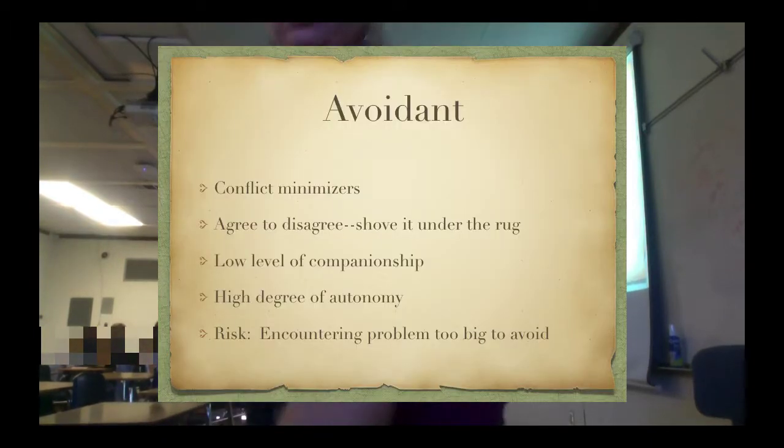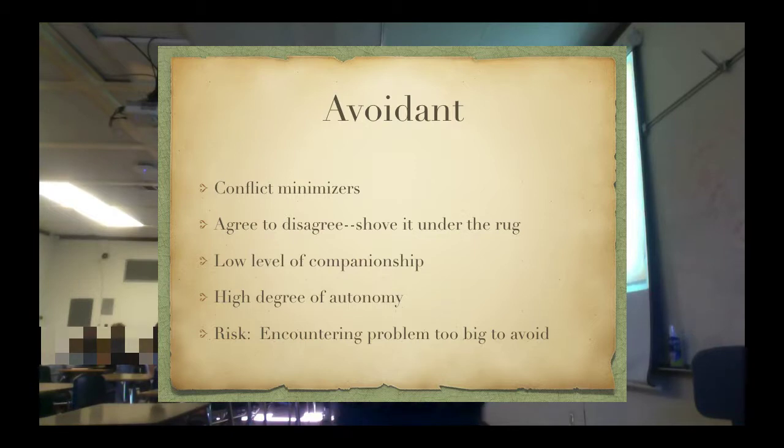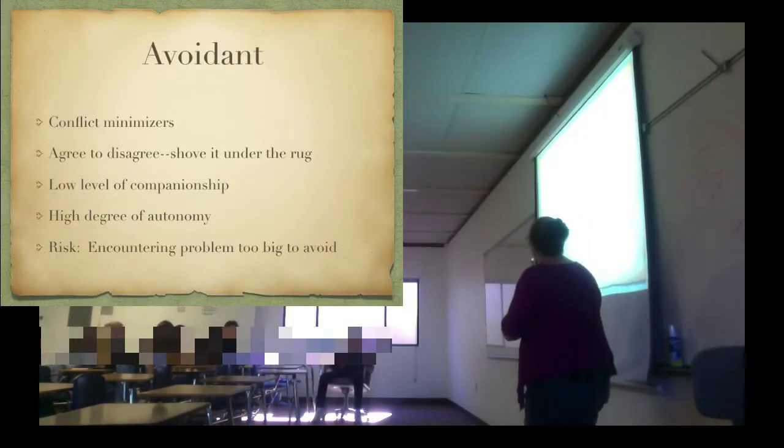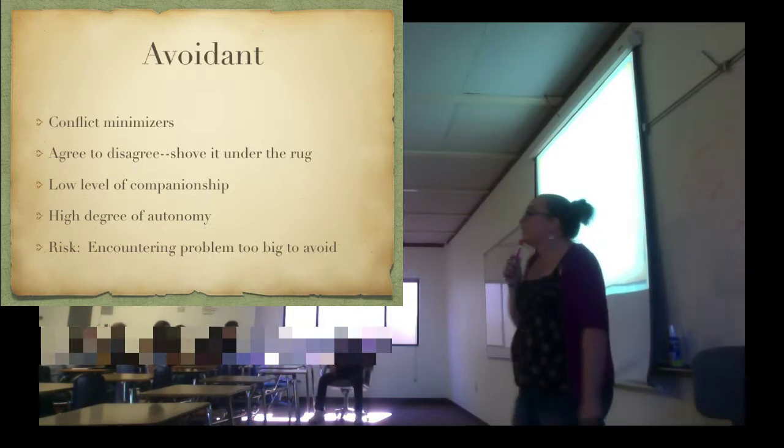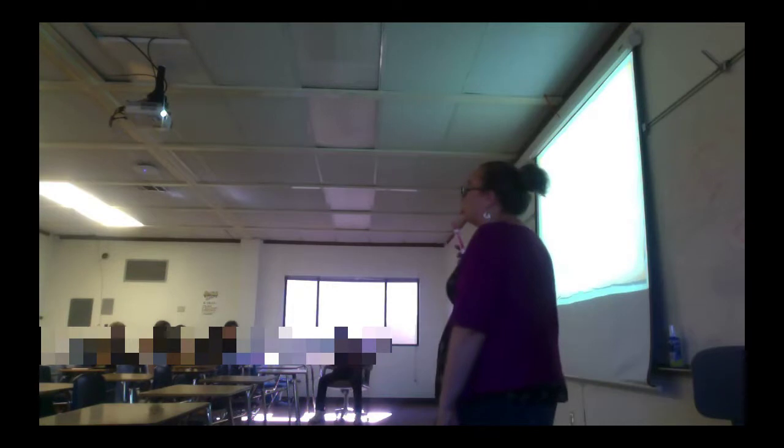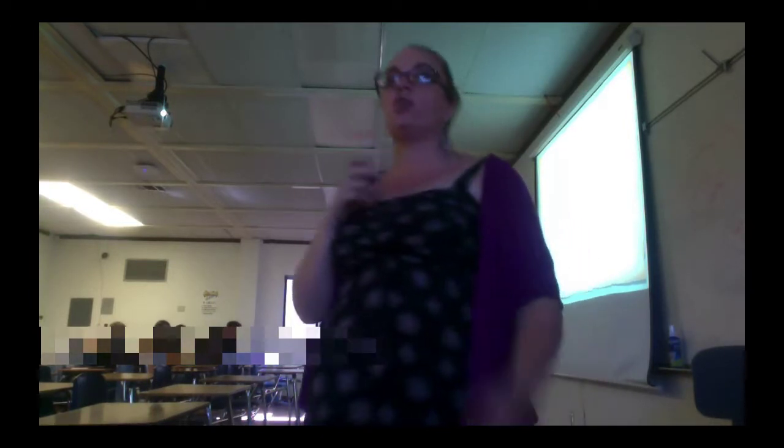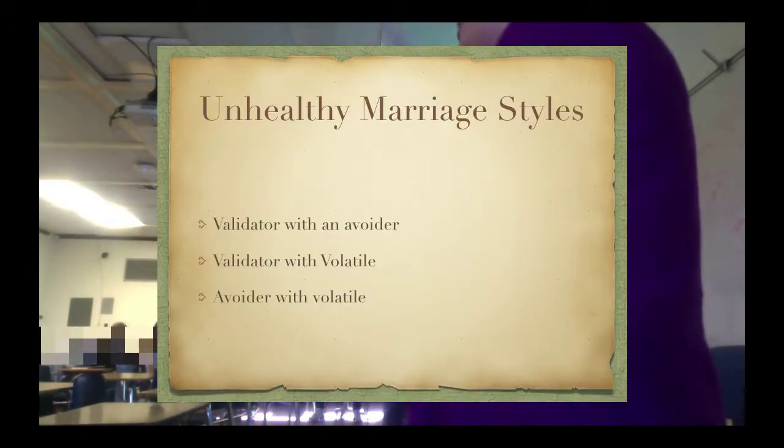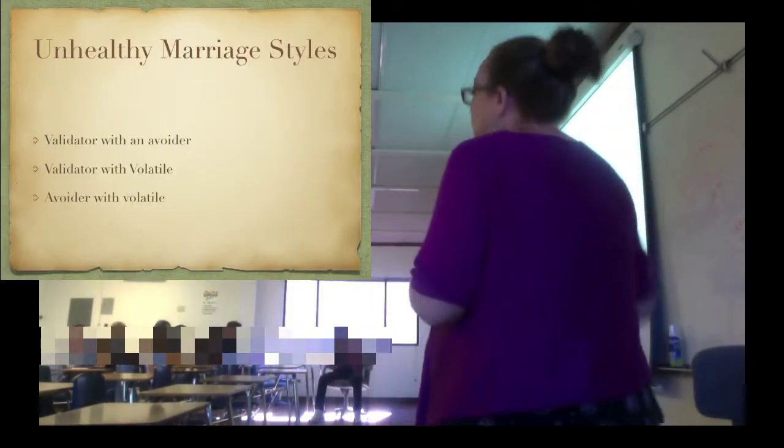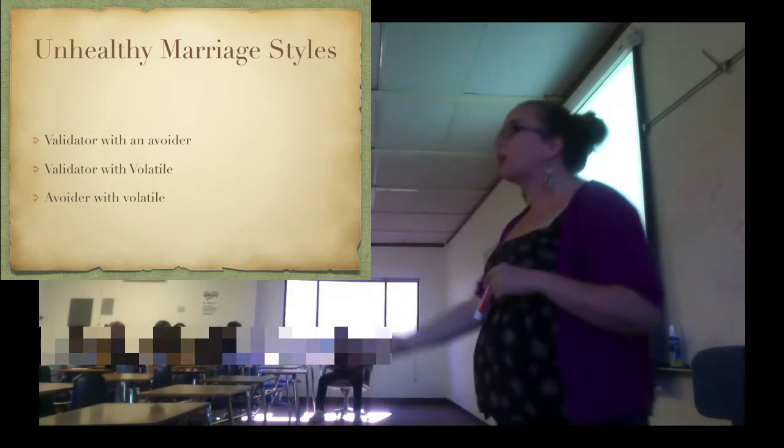So that helps you to determine which one you are. And in the book, there are quizzes. So if you're still not sure, take the quiz and see which one. All right, and then the avoider is a conflict minimizer. They agree to disagree. Very low level of companionship. Sometimes they just end up roommates because they're not engaging with each other. Very individualistic, which has its benefits. And they can get along just fine like that until there's a problem that's too big to ignore. And then that could destroy their relationship because at some point you have to deal with stuff. So again, all three of these can work if they're equal. If they're mismatched, you're in big trouble.